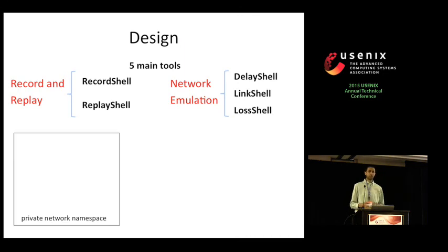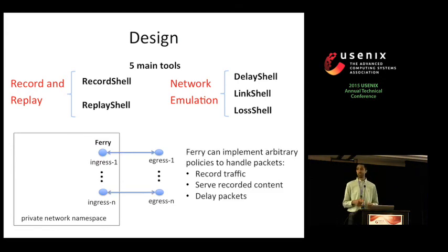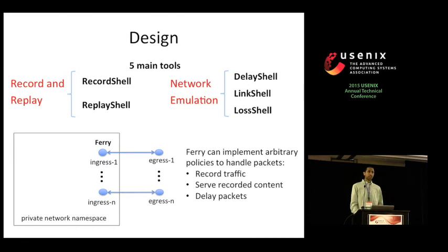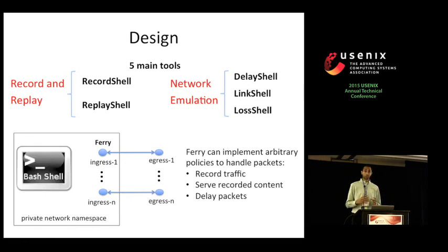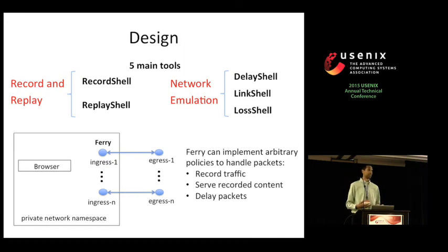On startup, each tool creates a private network namespace for itself. Within this namespace it creates several ingress interfaces, and outside the namespace it creates several egress interfaces. These interfaces are connected via packet queues, where the logic of each tool is implemented. For example, packets arriving at an ingress interface can be recorded, delayed, or responded to with recorded content. After setting up these interfaces, each tool spawns a bash shell within that private namespace, allowing users to run a variety of applications. All traffic to and from an application spawned within the namespace passes through the ingress interfaces and thus through the packet queues.